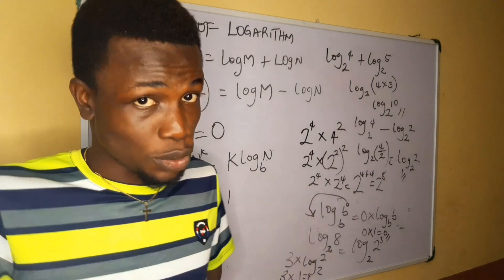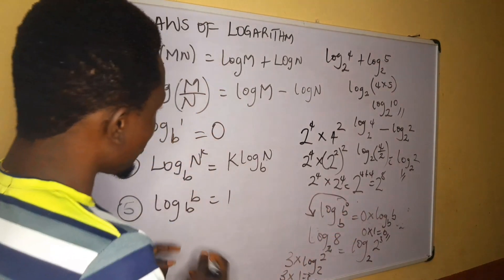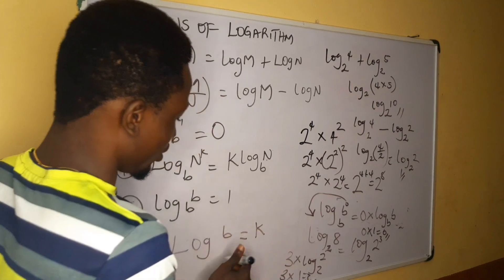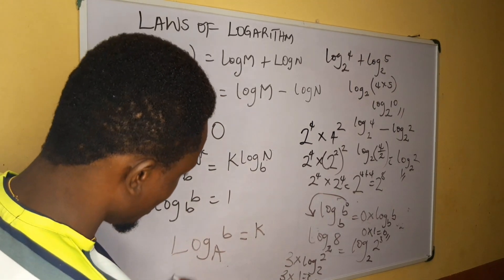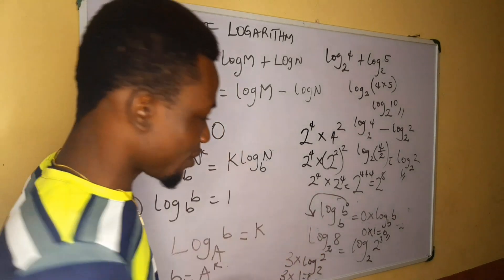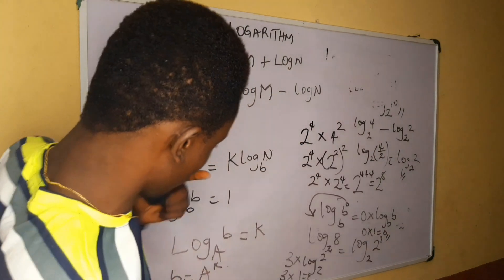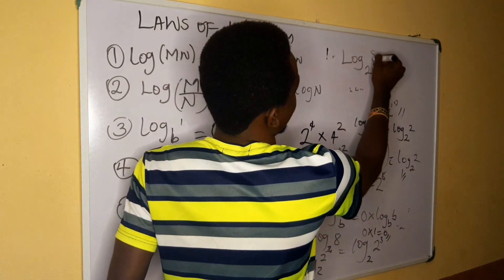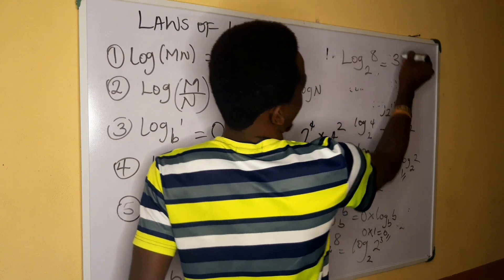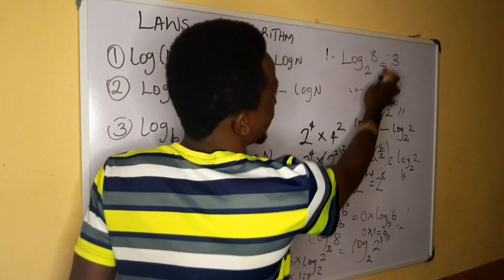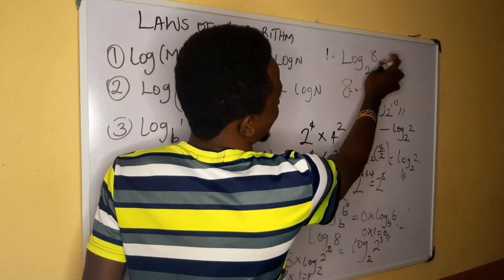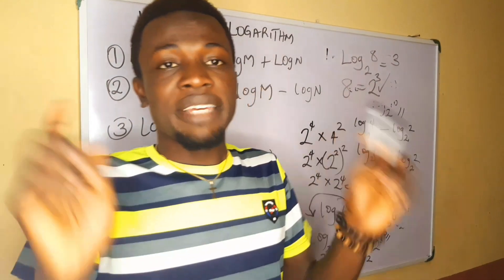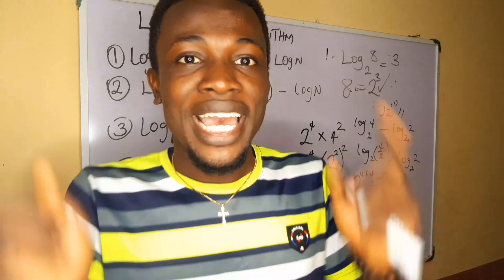The last law states that log of any number to its own base equals one. This follows from the basic definition of logarithm: if log b base b equals k, it means b equals b raised to power k. To verify, log base two of eight equals three, which means eight equals two raised to power three — and that is indeed correct. These are the basic laws of logarithm. If you have any questions or comments, please come to the comment section. Thank you for watching today's video. Bye!